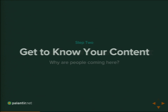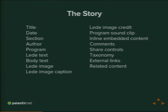Step two: get to know your content. We're building a content-driven site—why are people coming? They're coming for content. Know your content before you start designing. If your first step is jumping into Photoshop before you figure out your content, you are doing it wrong. For PRI, they had really only one major content type: a story. The story has a title, date published, section, author, program, body text, images, and various other bits. This is conceptually the breakdown of their content.